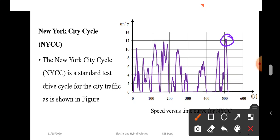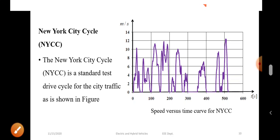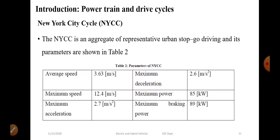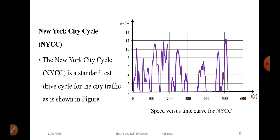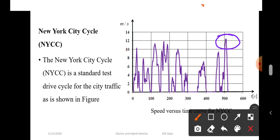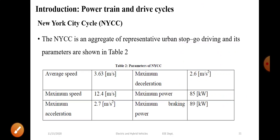The maximum speed is shown in one slide, and this is the drive cycle. The answer is to choose the motor rating. If we choose this drive cycle, we have different parameters: average speed, maximum deceleration, maximum speed of 12.4, maximum power, maximum acceleration, and maximum braking power.